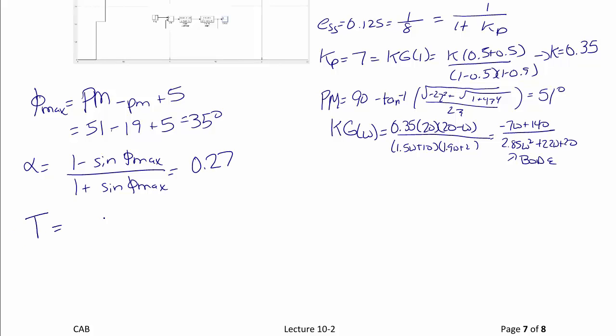T is equal to 1 over omega_max, which we know is 9, times the square root of alpha. So T is equal to 0.213.